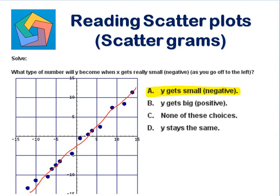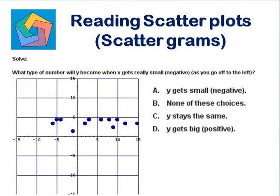Next problem. Solve: what type of number will y become when x gets really small negative as you go off to the left? Let's draw a best fit line here. This should be my best fit line — parallel to the x-axis, y remains constant. So we can say y stays the same when x gets really small or negative, far off to the left.